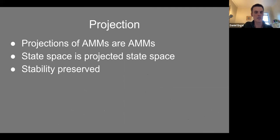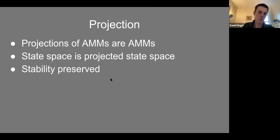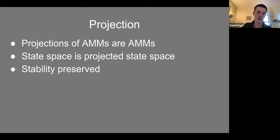Projection has two nice properties. First, if you take an AMM and project it — forgetting some assets — the result is still an AMM, with state space being the projected state space. Second, stability is preserved: if the original AMM is at a stable point with respect to some exchange rate valuation, when you project, the corresponding point is still stable with respect to a related valuation. So we understand exactly what the operation is doing.